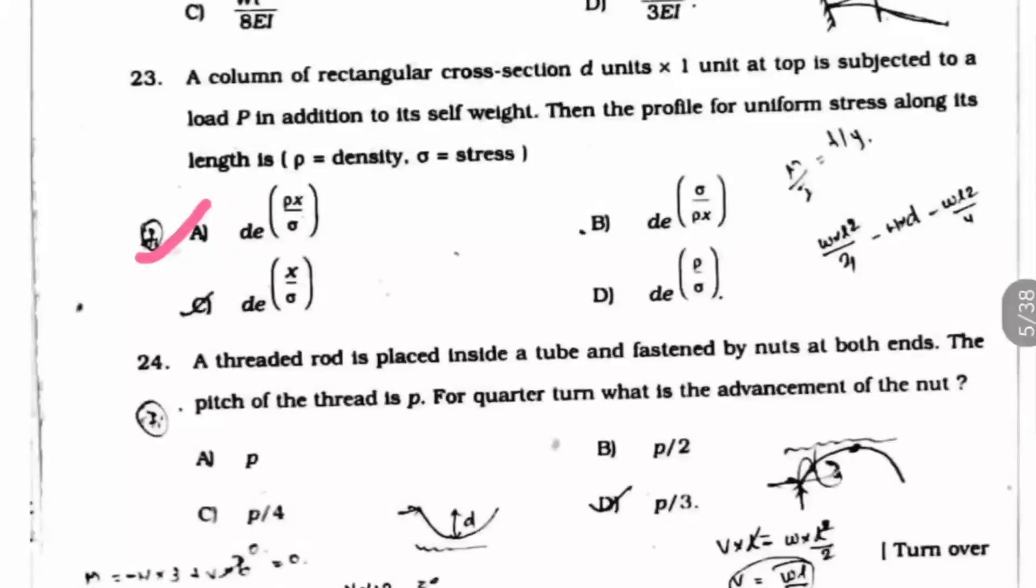Question 24: A threaded rod is placed inside a tube and fastened by nuts at both ends. The pitch of the thread is given as P for quarter turn. What is the advancement of the nut? They have given for quarter turn, so the option P by 4 is the right answer.